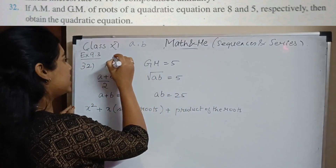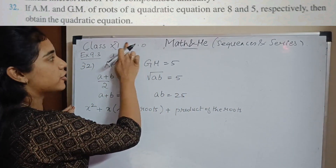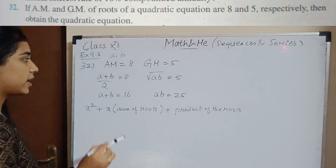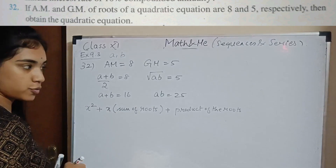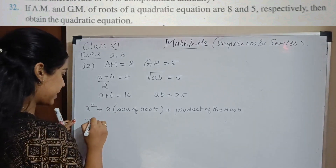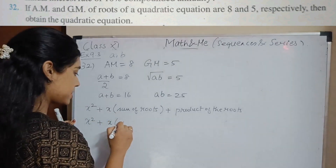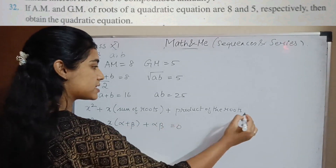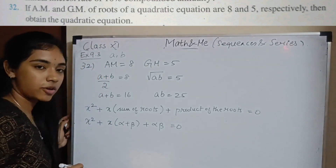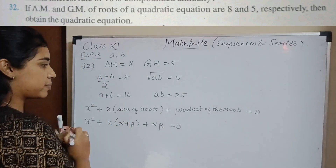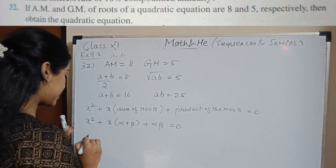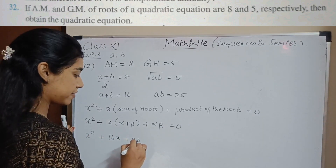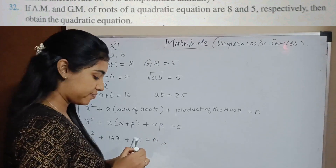Since a and b are the roots, we use the general quadratic form: x squared minus (sum of roots)x plus (product of roots) equals 0. We already have a plus b equals 16 and ab equals 25. Substituting, the quadratic equation is x squared minus 16x plus 25 equals 0.